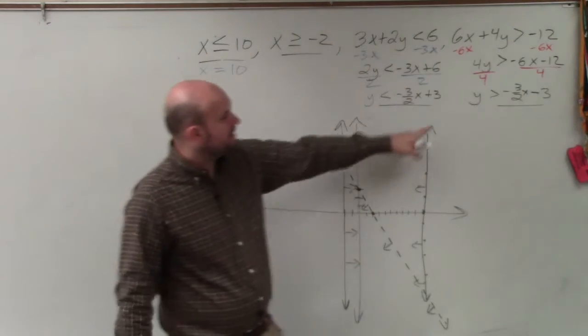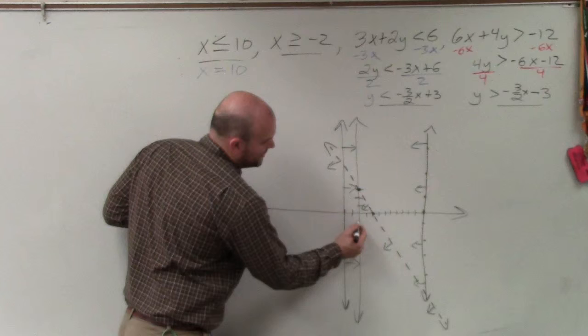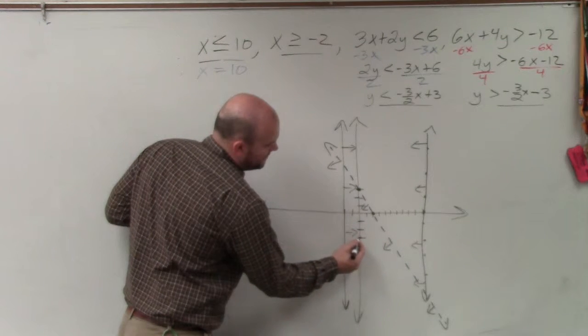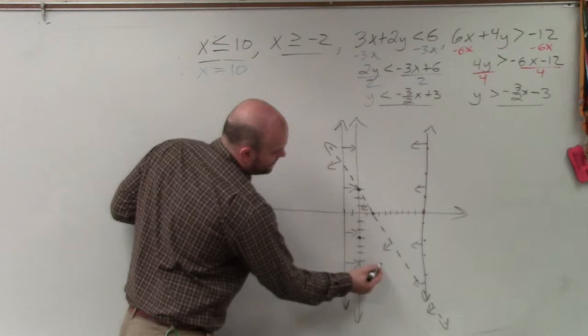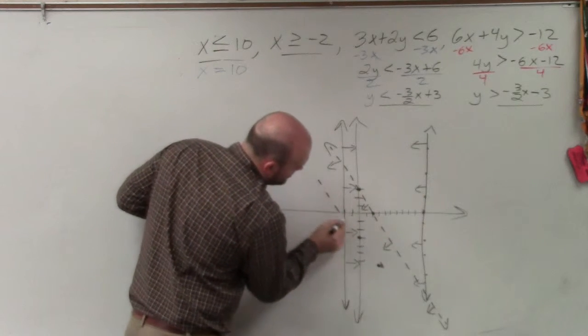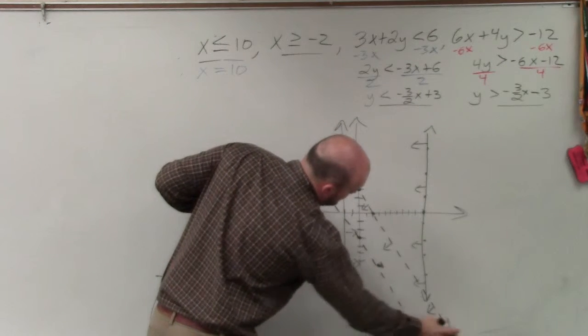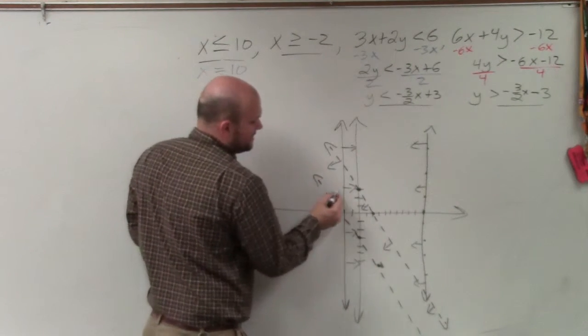So then the next one is y is greater than negative 3 halves minus 3. So now I go down negative 3, counting 1, 2, 3. And then I'm going to go down 3 to the right 2. And that one's greater than, so that's going to be above.